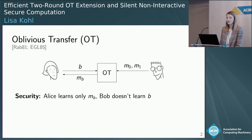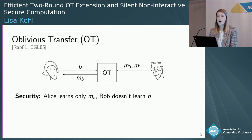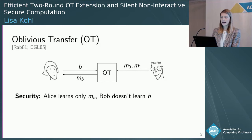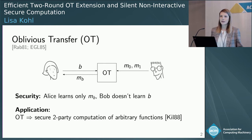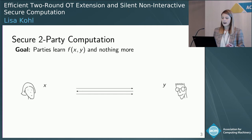Let's start with oblivious transfer. In oblivious transfer, Alice and Bob want to execute a protocol such that in the end, Alice learns one of Bob's messages of her choice and nothing about the other message. Bob does not learn which message Alice learned. This is a very useful building block because it pretty much gives you everything you wish for in secure computation — it allows you to compute arbitrary functions securely.